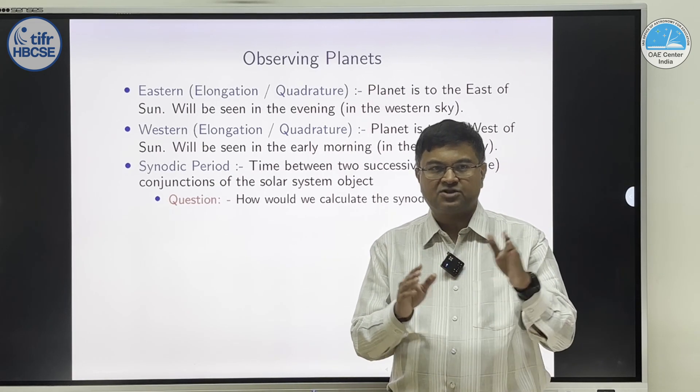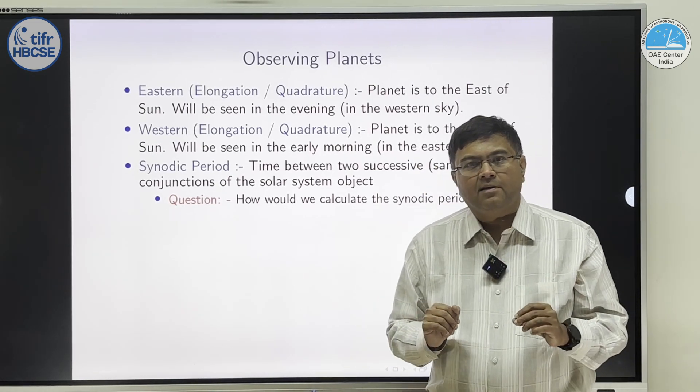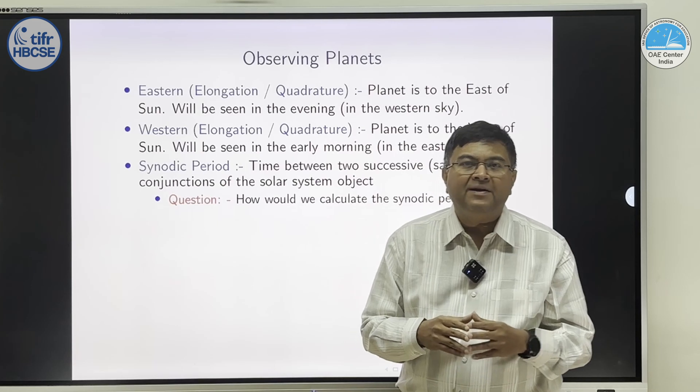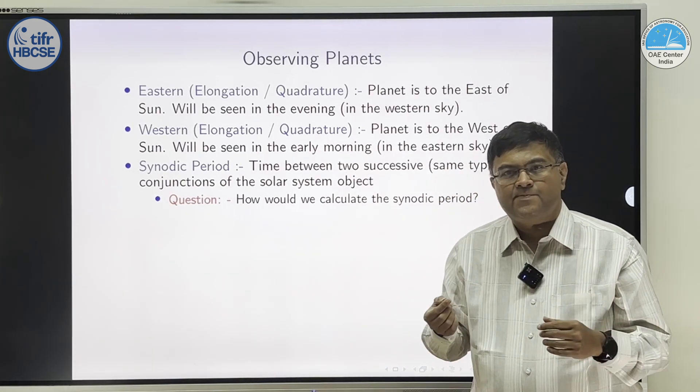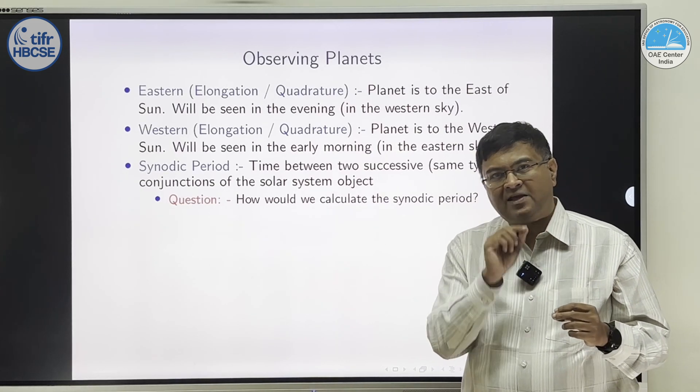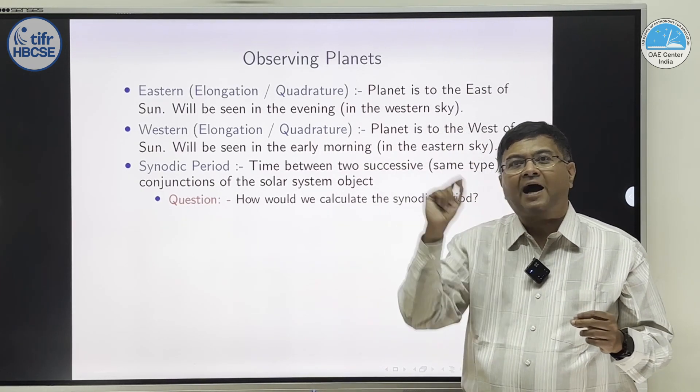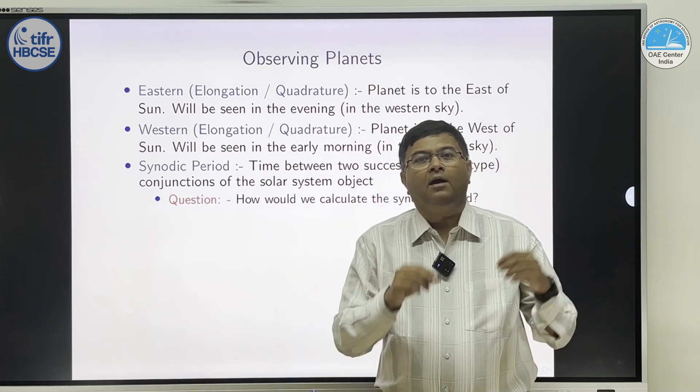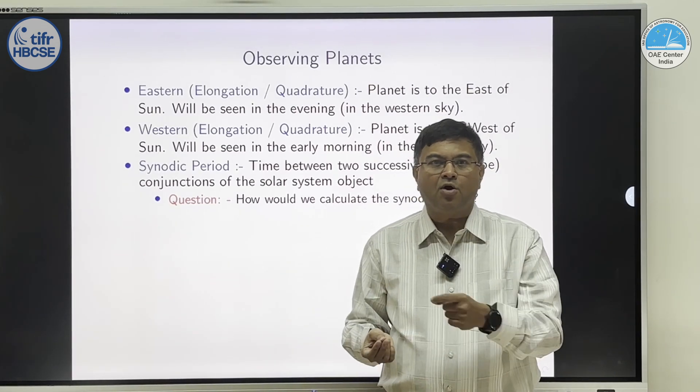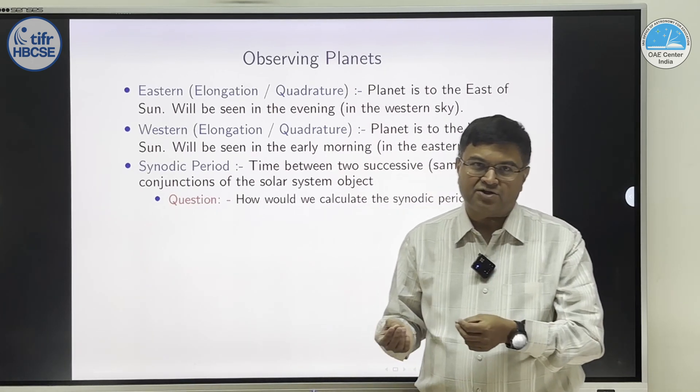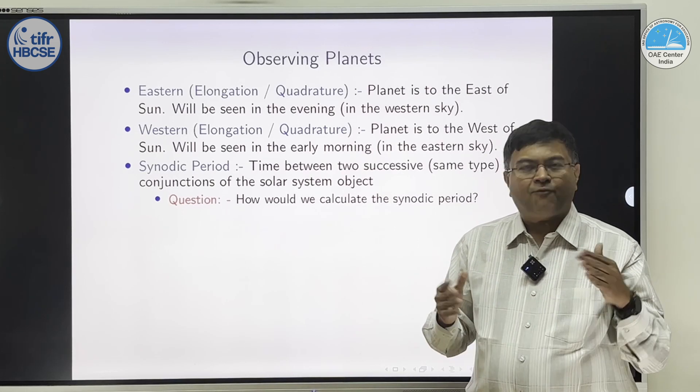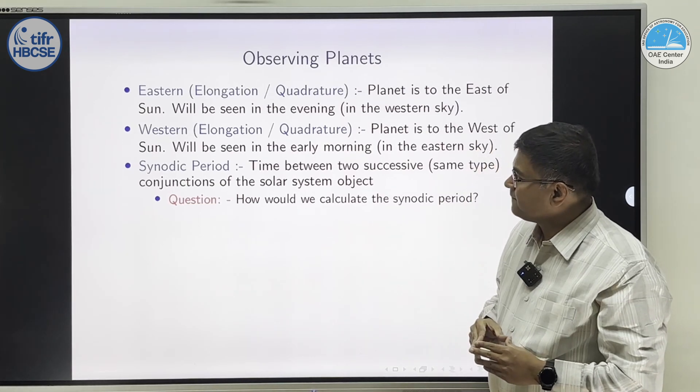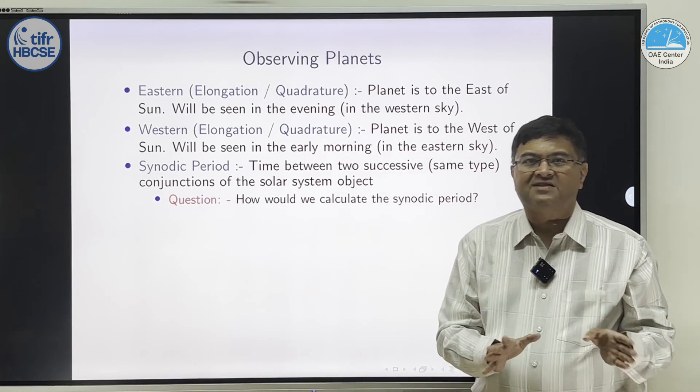Now, we have seen this conjunction, opposition, quadrature. We can define the period of the planet as seen from Earth. See, earlier, people did not know that all planets are going around Sun. All they could measure was, we can see planets moving in the sky, and we have to measure how long it takes a planet to come back to similar position. What is similar position? Say, inferior conjunction to next inferior conjunction. Or, superior conjunction to next superior conjunction. Now, here, for outer planet it could be conjunction to conjunction, or opposition to next opposition. This is called as synodic period. Synodic period is time between two successive conjunctions of same type.